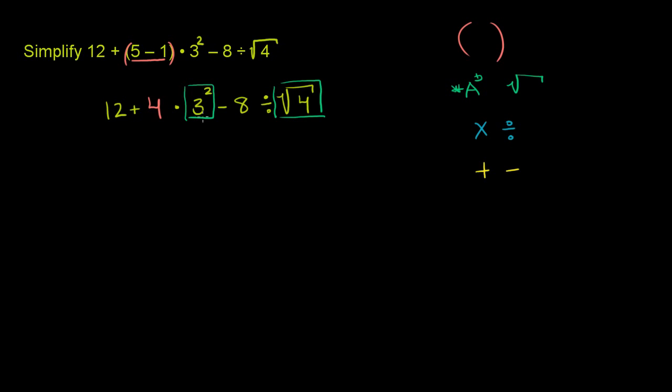3 to the second power is 9. That's the same thing as 3 times 3. So let me write that down, just as a review. 3 to the second power is equal to 3 times 3, which is equal to 9. It is not equal to 3 times 2. It's 3 times 3. So 3 squared is 9, so we'll put that 9 there.